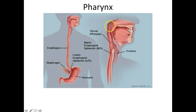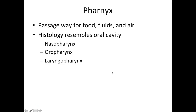All of this back here is part of the pharynx. If you follow the pharynx down, it eventually becomes the esophagus. The pharynx is the passageway for food, fluids, and air. The histology of it resembles the oral cavity, so it's going to be lined with stratified squamous epithelium. There are three parts to the pharynx to remember: nasopharynx, oropharynx, and laryngopharynx. Remember, these are not specific structures but areas.